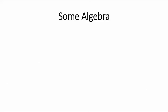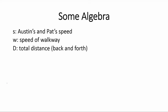Let us use some algebra. Let S be Austin's and Pat's speed and W be the speed of the walkway. Let capital D be the total distance back and forth. We want to consider the case where S is greater than W. We also know that velocity is equal to distance over time for constant velocity or constant speed.